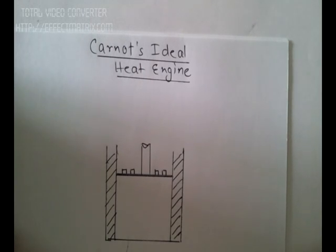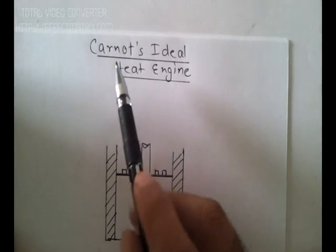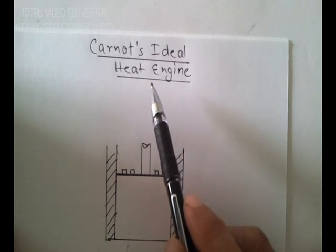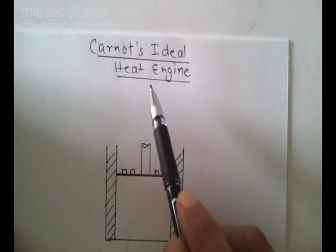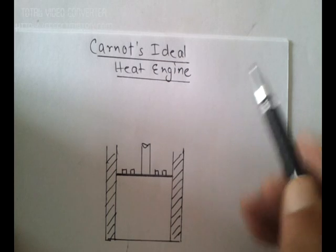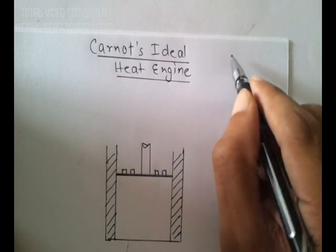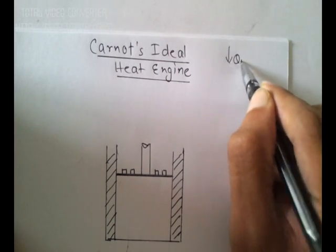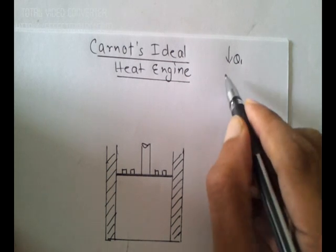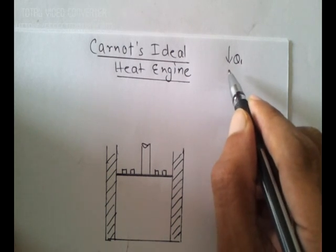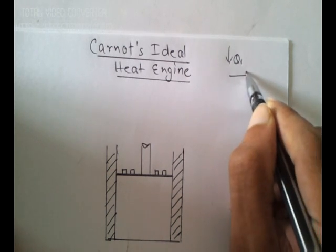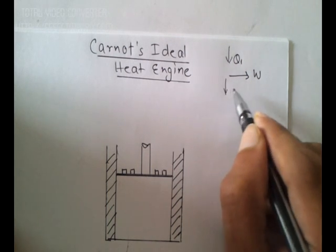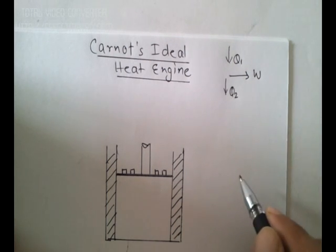In this video we are going to look at the Carnot's Ideal heat engine. In the previous video we had a look at a heat engine, and what we observed was that in a heat engine you have heat Q1 being received from a source, W is the work done, and heat Q2 is given off to the sink.